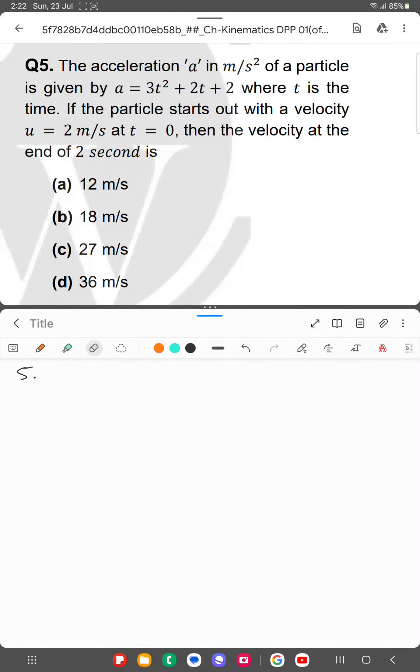For this question we have to find the velocity at the end of 2 seconds. As we know that velocity is equal to integration of a dt. Integrating 3t² + 2t + 2 dt